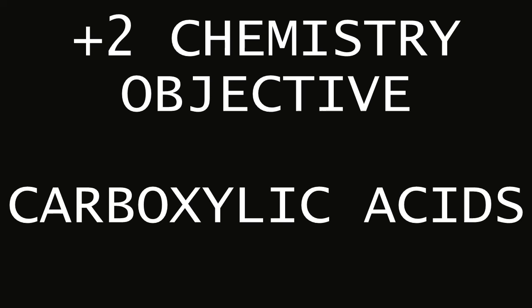The compound which undergoes intramolecular dehydration with P2O5, phosphorus pentoxide, is formic acid.